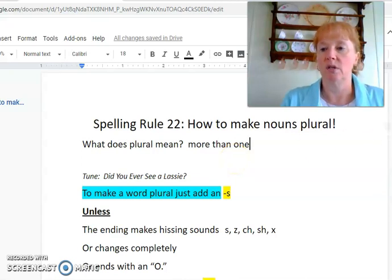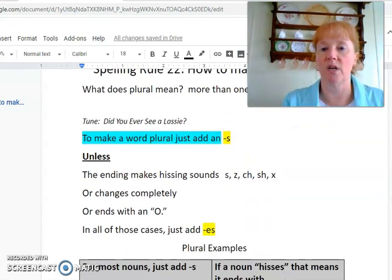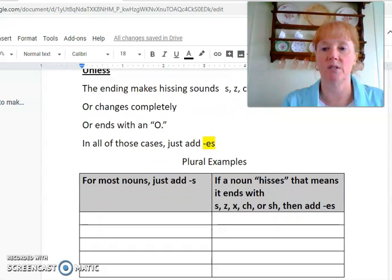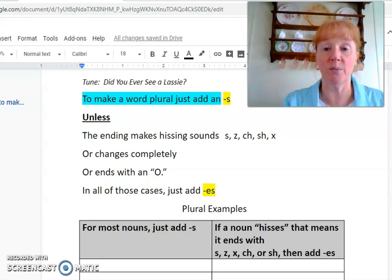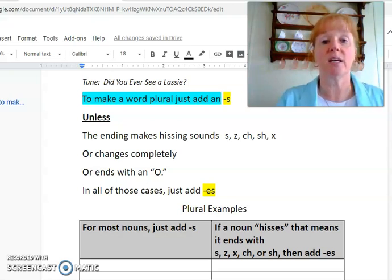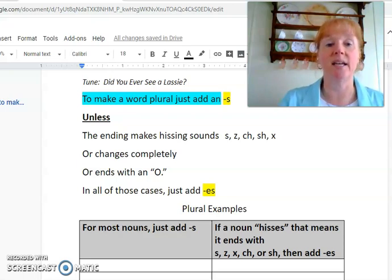So, let's sing the tune to the rule, and then we'll talk about what it means. It's to the tune of Did You Ever See a Lassie? Okay? And we have to start it kind of high or it gets too low. To make a word plural, just add an S unless the ending makes hissing sounds or changes completely or ends with an O. In all of those cases, just add E-S.